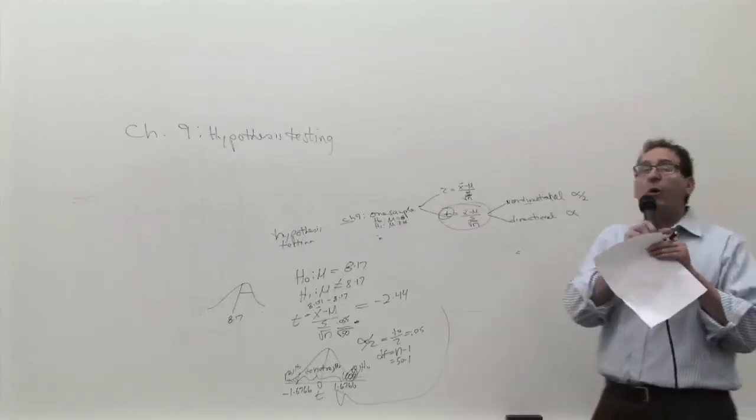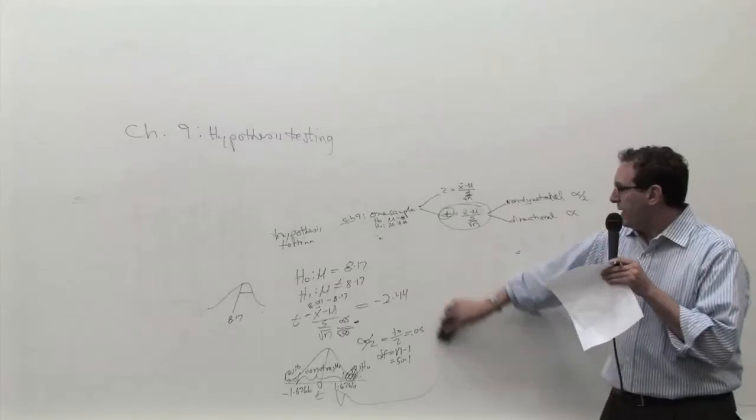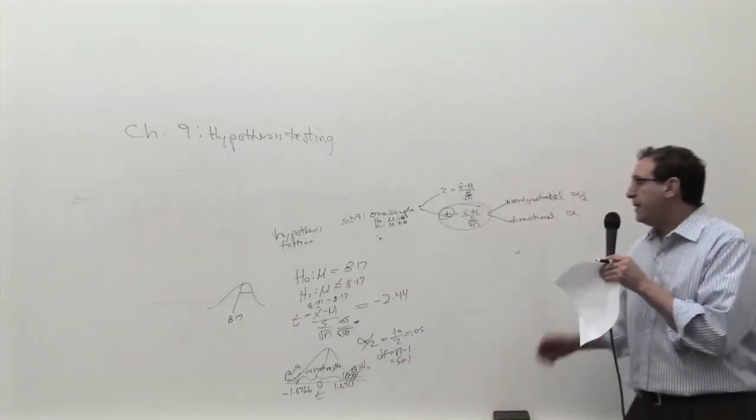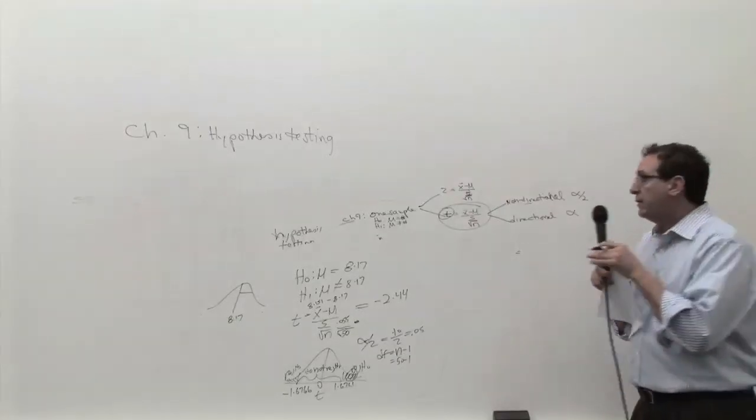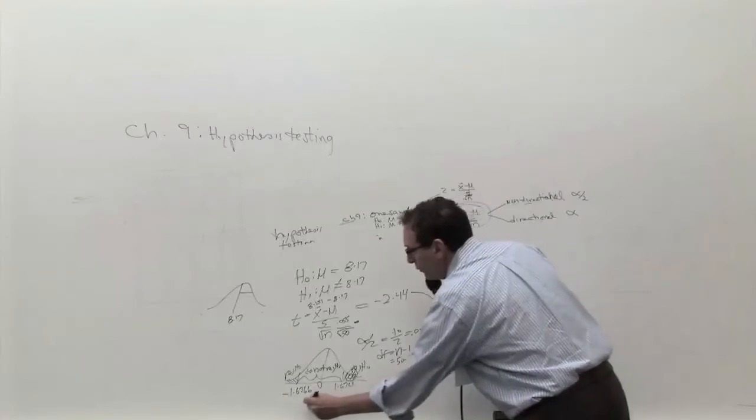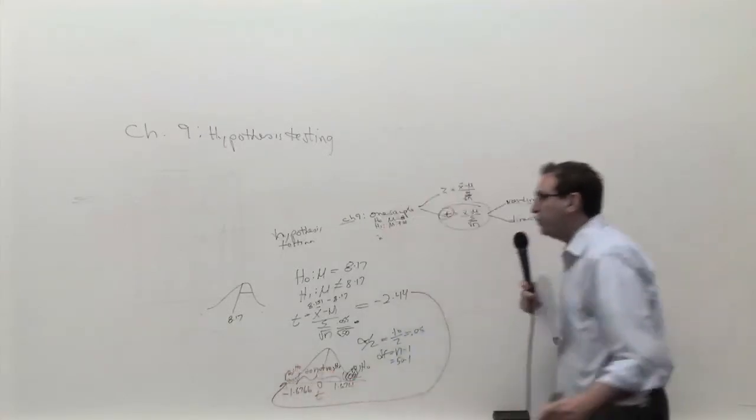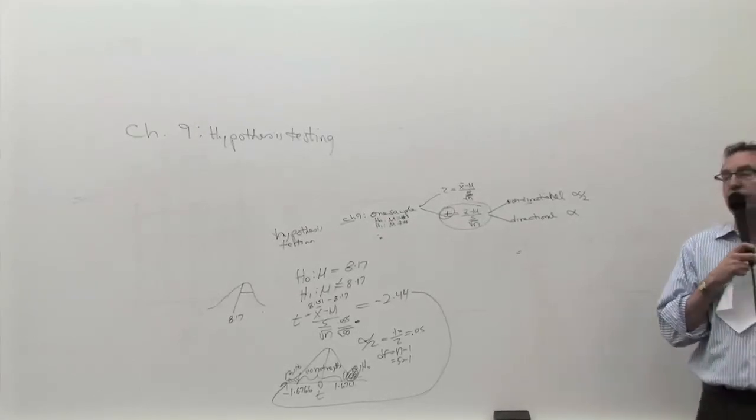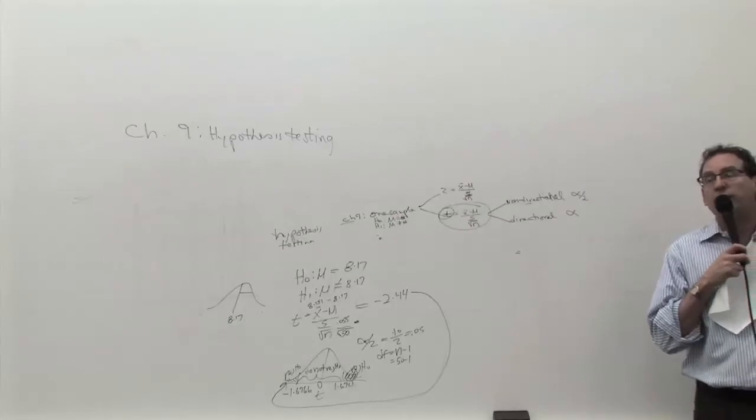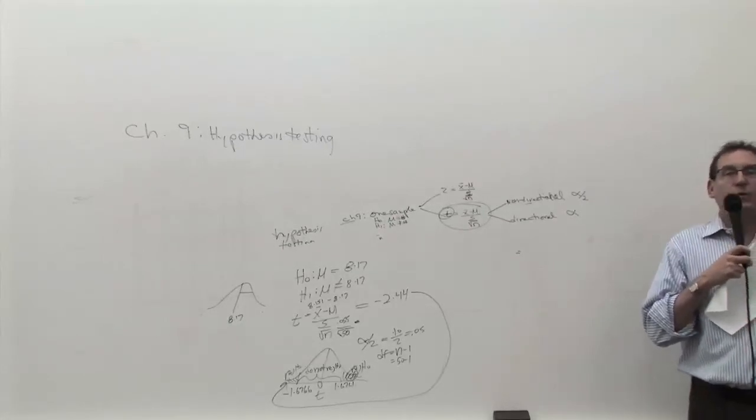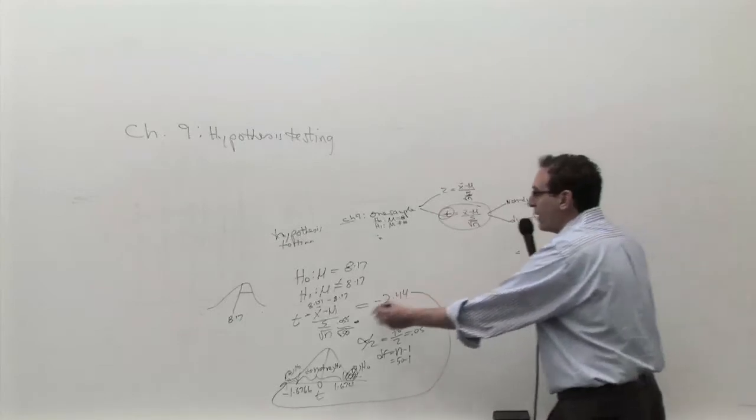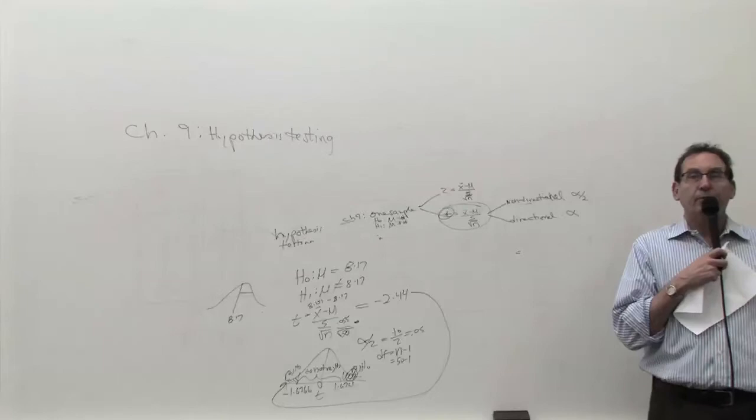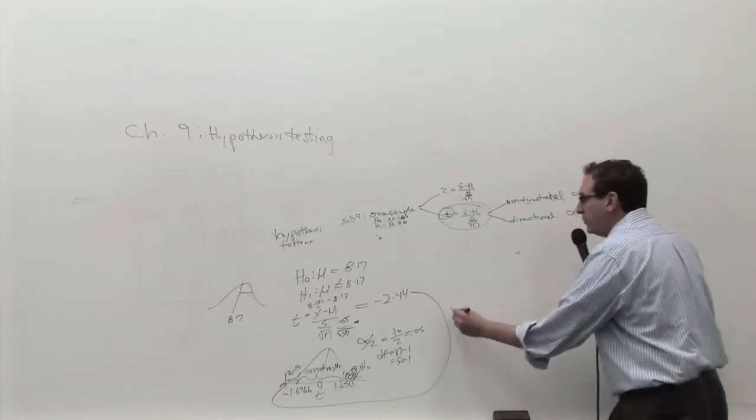Step number four, which is the most important step, the easiest step, and the step that most people mess up on, is the conclusion. So where is minus 2.44? Minus 2.44 is even more negative than minus 1.6, so it's clearly to the left of that line. What do we label that region? Reject H0. So it's like asking, what color is George Washington's white horse? White, right? So if you end up in the reject region, what's your conclusion? Reject. Okay, so the answer is to reject H0.